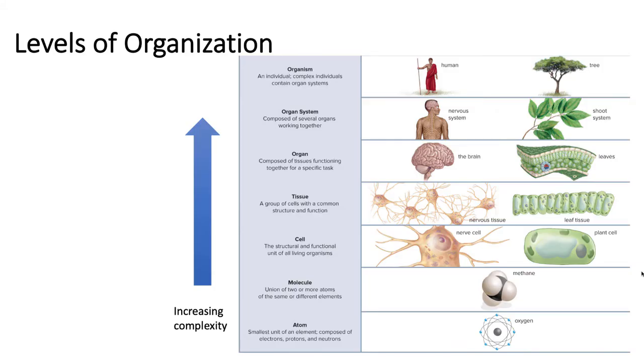Everything is made up of atoms. In a living organism, atoms bond together to make up molecules, such as proteins or carbohydrates. Many different types of molecules come together to make up a cell, which is the smallest unit of life.